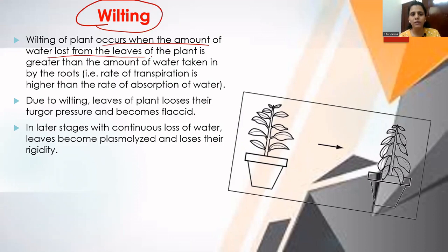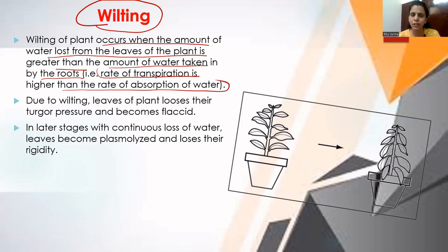Wilting of a plant occurs when the amount of water lost by the leaves is greater than the amount of water taken in by the roots — that is, when the rate of transpiration is higher than the rate of absorption of water. This is a key point for one-mark answers in IGCSE exams.